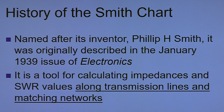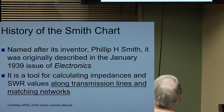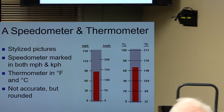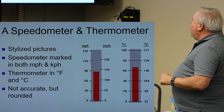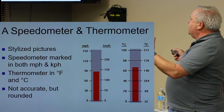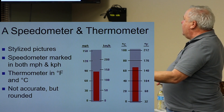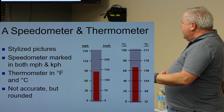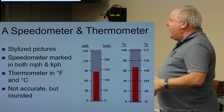Not antennas. This is basically how the radio looks — what the radio sees on the end of the cable you plug into the transmitter. That's what this chart is all about. If we think of a speedometer and a thermometer, they're kind of stylized pictures. They're marked in miles per hour and kilometers per hour; a thermometer in Fahrenheit and Celsius. They're not very accurate, but they're rounded to the value.